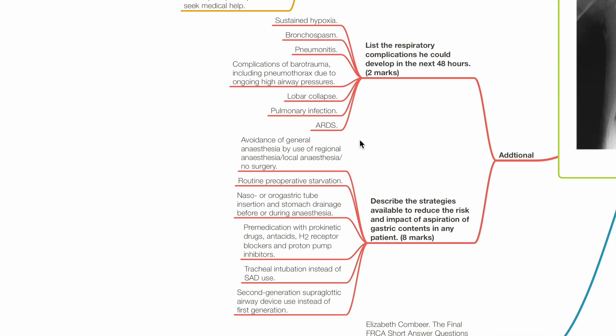Describe the strategies available to reduce the risk and impact of pulmonary aspiration of gastric contents in any patient. This includes avoidance of general anesthesia by use of regional anesthesia, local anesthesia or avoiding surgery, routine preoperative starvation, nasogastric or orogastric tube insertion and stomach drainage prior or during anesthesia, premedication with prokinetic drugs and antacids, H2 receptor blockers and proton pump inhibitors, tracheal intubation instead of supraglottic airway device use and second-generation SAD use instead of first generation.